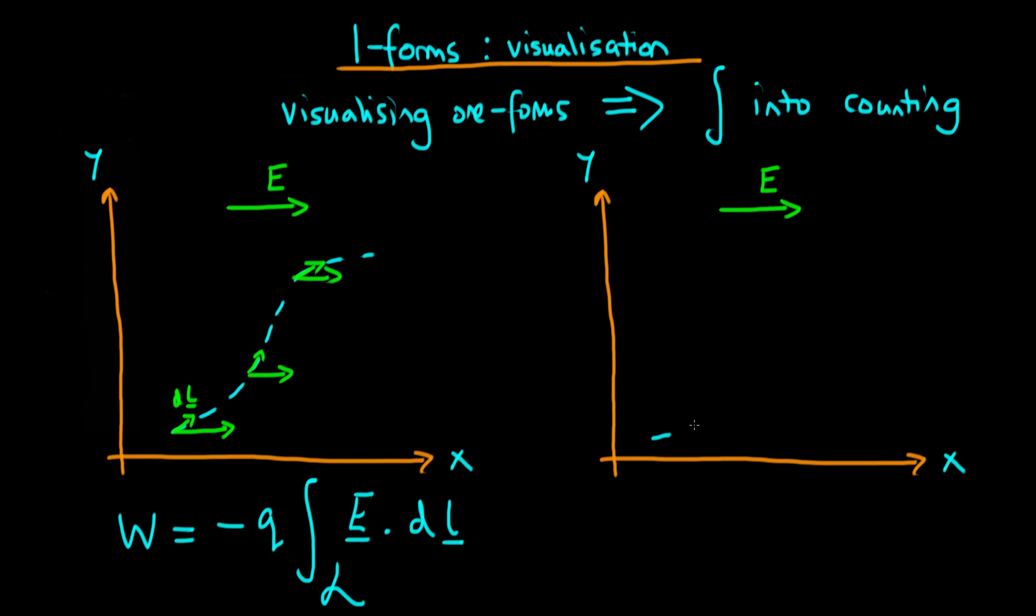An alternative way of thinking about this sort of integral is through the use of one-forms. What we do in visualizing one-forms is we imagine a family of surfaces. I'm saying surfaces here because remember there is a z direction as well, but I'm only choosing to draw the plane in x-y.